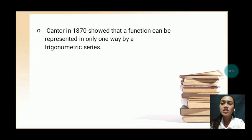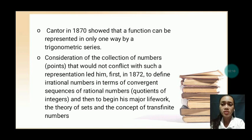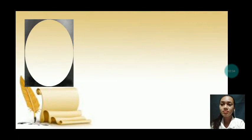Cantor in 1870 showed that a function can be represented in only one way by a trigonometric series. Consideration of the collection of numbers or points that would not conflict with such a representation led him, first in 1872, to define irrational numbers in terms of convergent sequences of rational numbers (quotients of integers), and then to begin his major life work: the theory of sets and the concept of transfinite numbers.